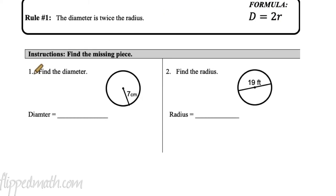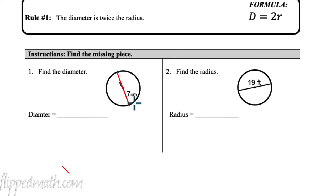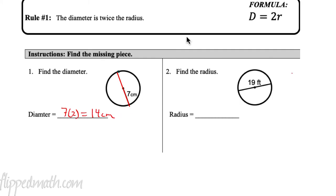For the first example, find the diameter. The radius is seven. The distance all the way across is the diameter. We know the radius is seven, so the diameter must be seven times two, which equals 14 centimeters.